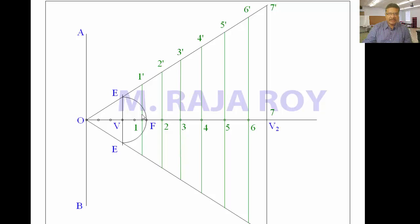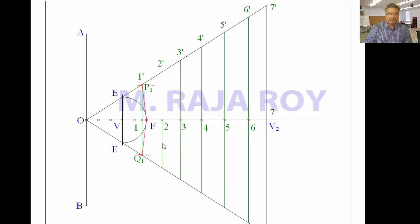Take 1–1 dash as radius with F as center and draw an arc onto the 1–1 dash line only, on both the top and bottom sides. Call the top point P1 and the bottom point Q1. Next, take 2–2 dash as radius with F as center and draw an arc onto the 2–2 dash line — one arc on top, one on the bottom. Call these P2 and Q2.